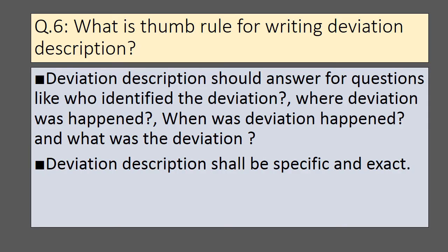What is the thumb rule for writing deviation description? Deviation description should answer four questions: who identified the deviation, where the deviation happened, when the deviation happened, and what was the deviation. The deviation description shall be specific and exact.